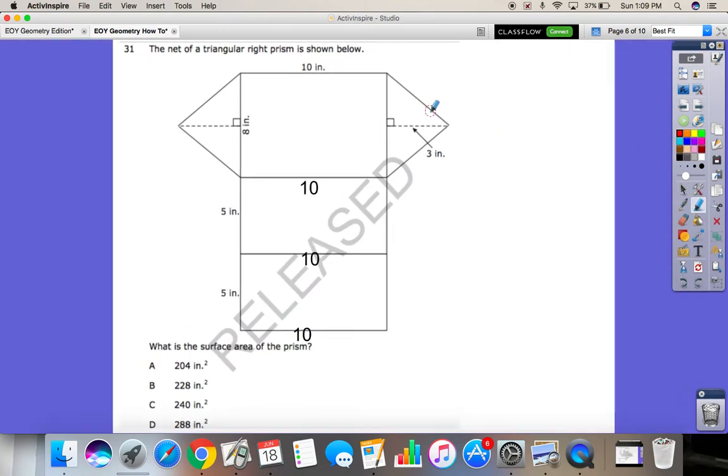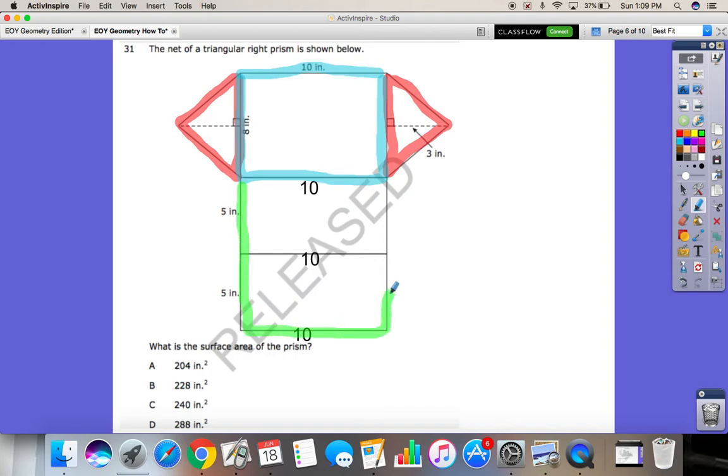I'm going to color code this first. I see that I've got a triangle, and these two triangles are also going to be congruent, which means the same. Then I've got this rectangle, which is an 8 by 10. But I noticed down here, these ones are 5 by 10. So I'm going to swap colors for those. These are each 5 by 10. Because they're the same, I'm going to get them the same color.